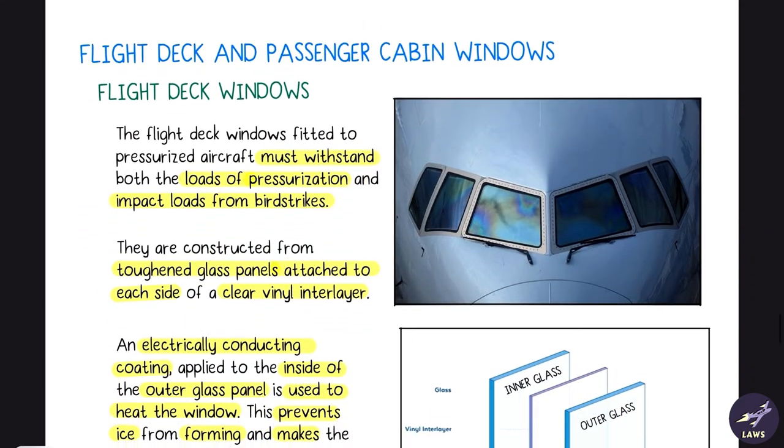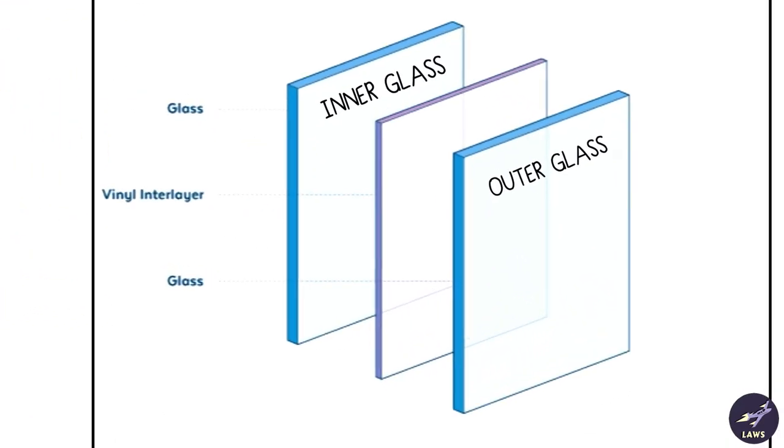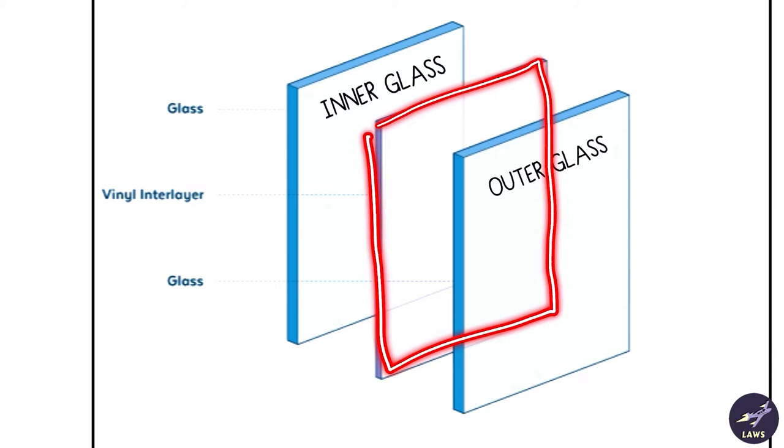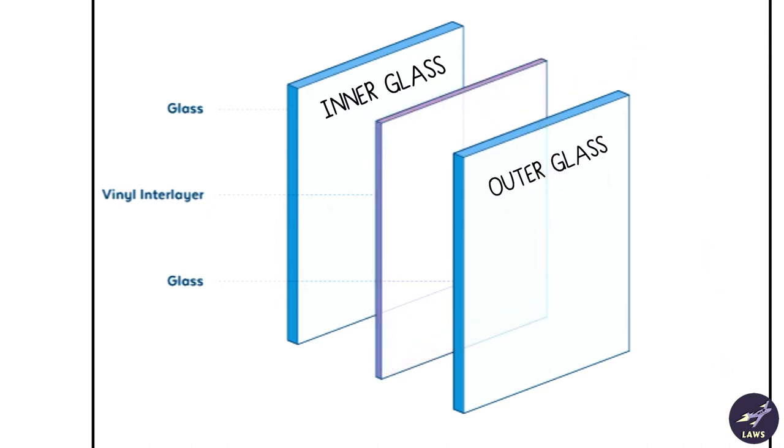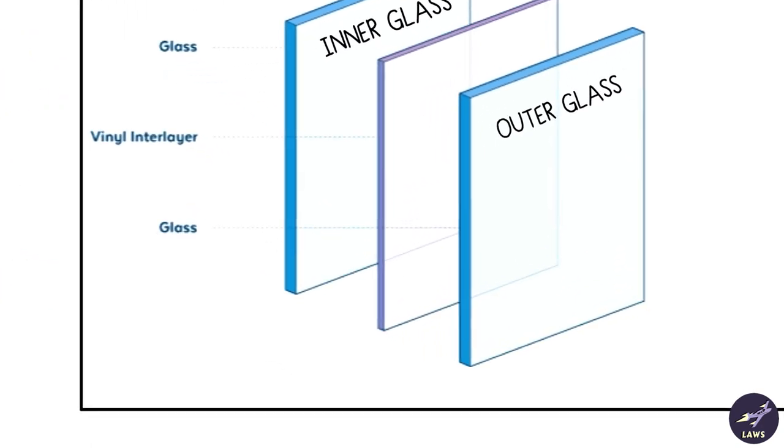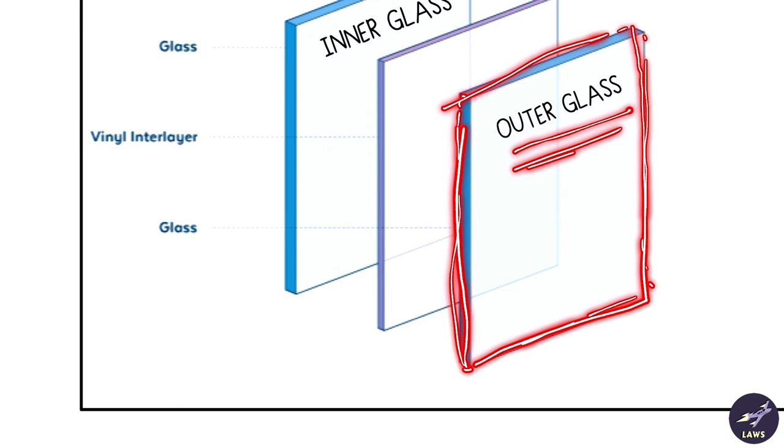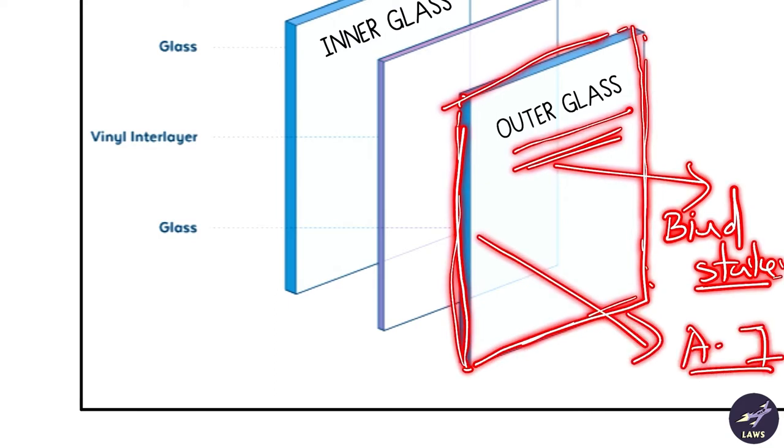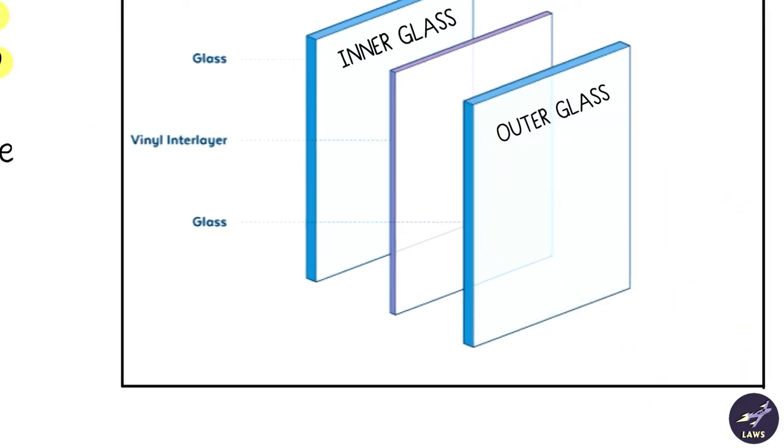Then we have flight deck windows. In construction it looks something like this. There's an outer glass, then an inner glass, and in between there is a vinyl interlayer. This vinyl interlayer is similar to tempered glass. In case this glass shatters, it will shatter and stick to this, it won't come out to the pilot's face. The outer glass has an electrical coating on its inner side. This is basically to make the outer glass more resilient to bird strikes and it helps in anti-icing.